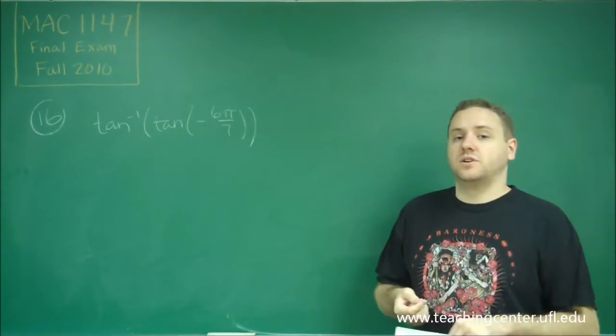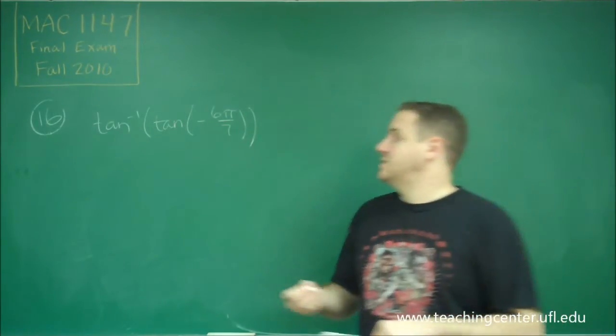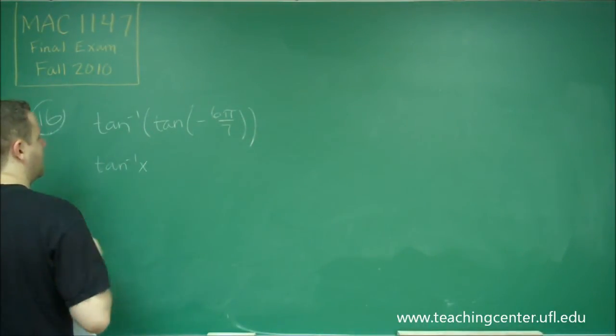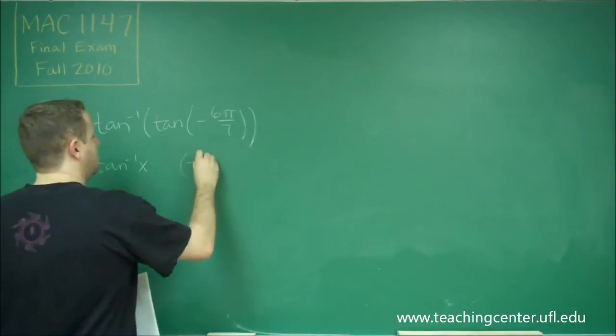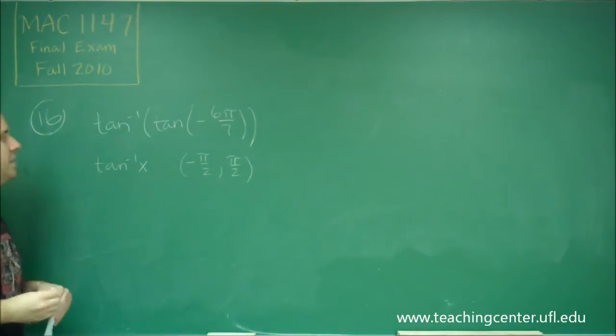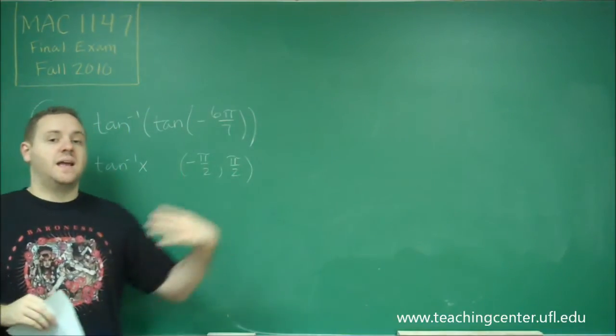However, you have to take into consideration what the range of arctangent is. So remember that arctangent of x can only be between negative pi over 2 and pi over 2. That's the only things that arctangent of x can output.